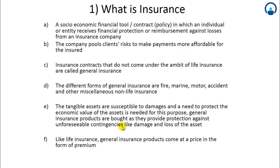Tangible assets are susceptible to damages, and there is a need to protect the economic value of those assets. For this purpose, general insurance products are bought, as they provide protection against unforeseeable contingencies like damage and loss of the asset. Tangible assets are physical products that we can feel and touch — for example, a vehicle, a motor car, a flat, or a home. Whoever purchases these products is susceptible to damages.